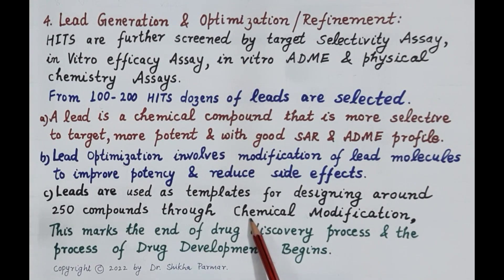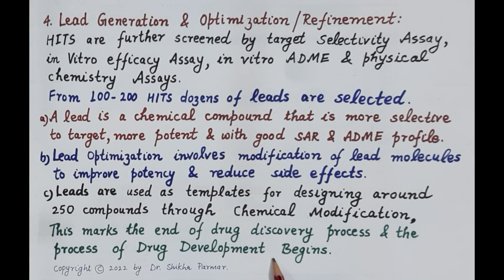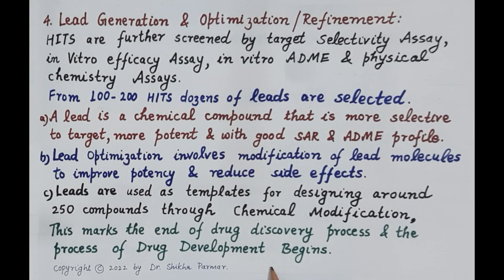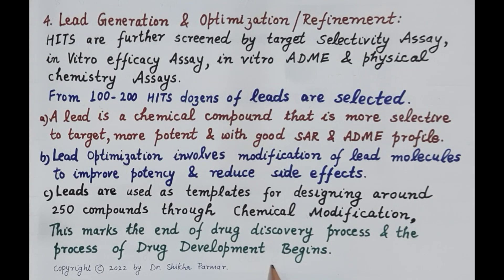The best compound is identified as a new drug and other candidates are screened out. Optimization of lead compounds marks the end of the drug discovery process, and the process of drug development begins. During drug development, optimized lead compounds are further evaluated and finally one new drug molecule is identified and selected. If approved by the FDA, formulations are manufactured at large scale and the new drug is released in the market.